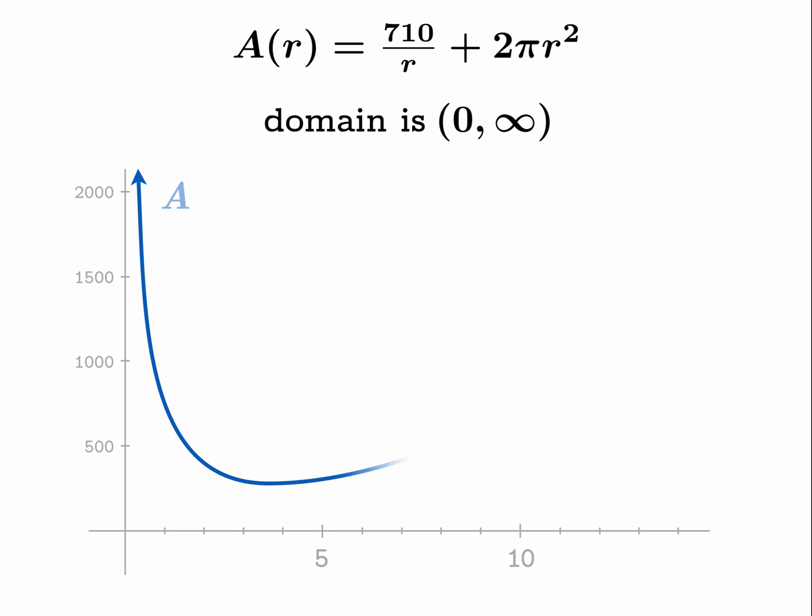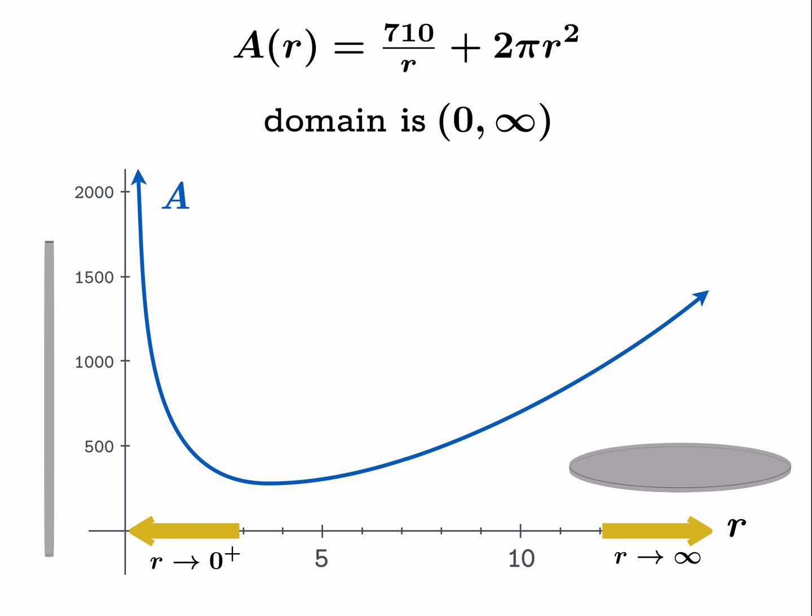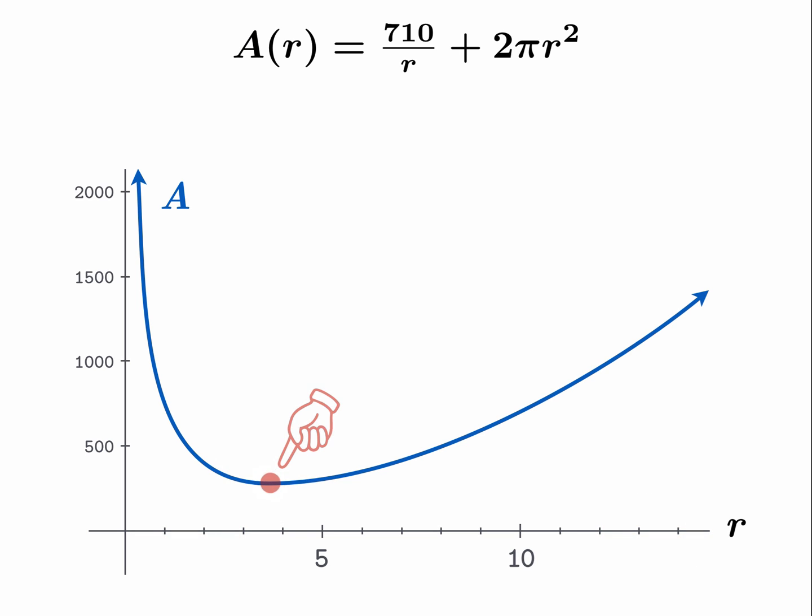Now if we plot A as a function of the radius r, we get a graph that looks like this. As r goes to infinity we get the manhole covers, and as r approaches zero from the right we get the tubular skyscrapers. We're interested in finding this point right here where the area is a minimum. We want to find the value of the radius for which the surface area is as small as possible.